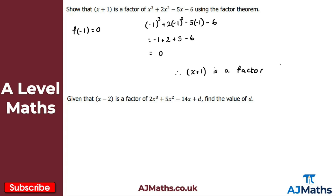So therefore x plus 1 is a factor of our cubic — x cubed plus 2x squared minus 5x minus 6 — as f of minus 1 is equal to 0. And that's all we need to write at the very end, and that would get us full marks. So that's the solution to the first example.